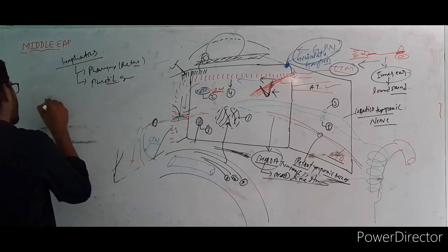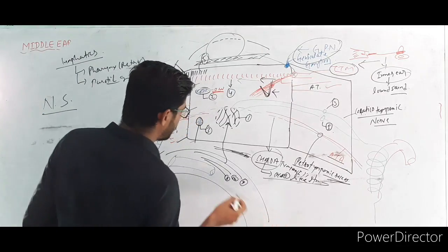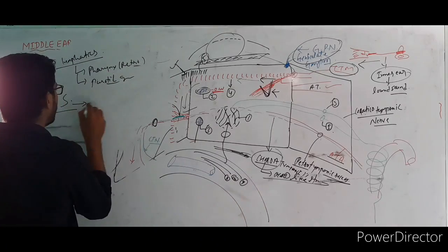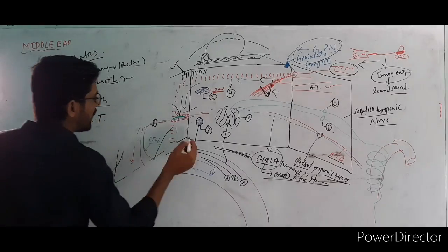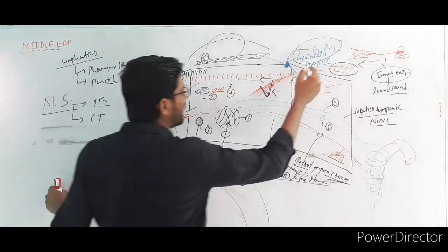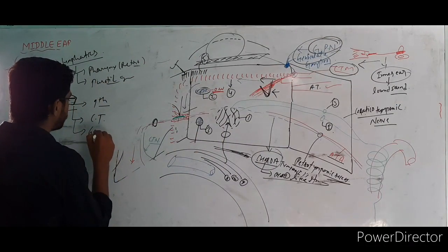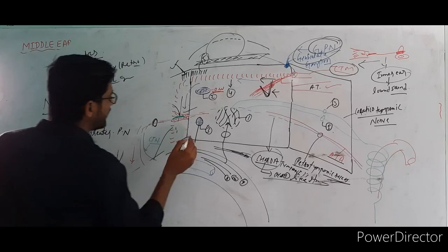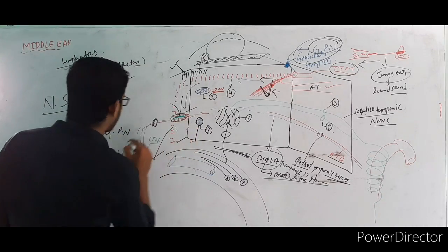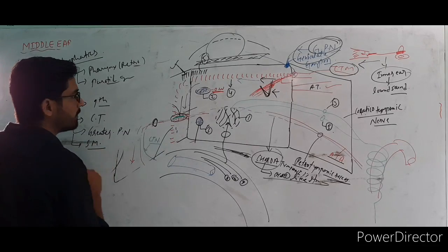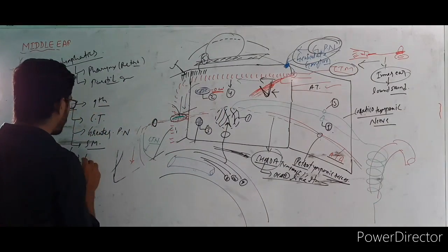The nerve supply: from the glossopharyngeal nerve — a branch called the tympanic nerve (Jacobson's nerve) — which forms the tympanic plexus. The chorda tympani nerve is also there. From the facial nerve, there is a branch to the stapedius muscle. There are also two caroticotympanic nerves from the sympathetic plexus around the internal carotid artery.